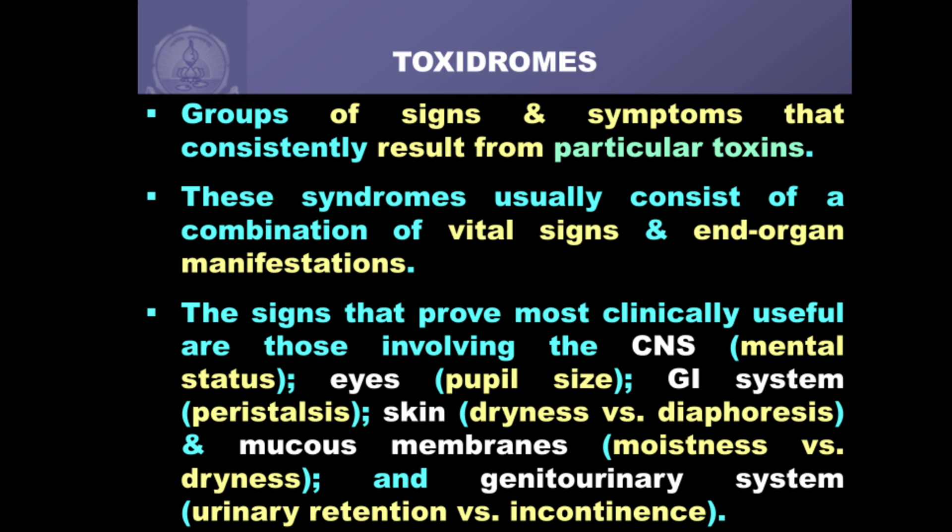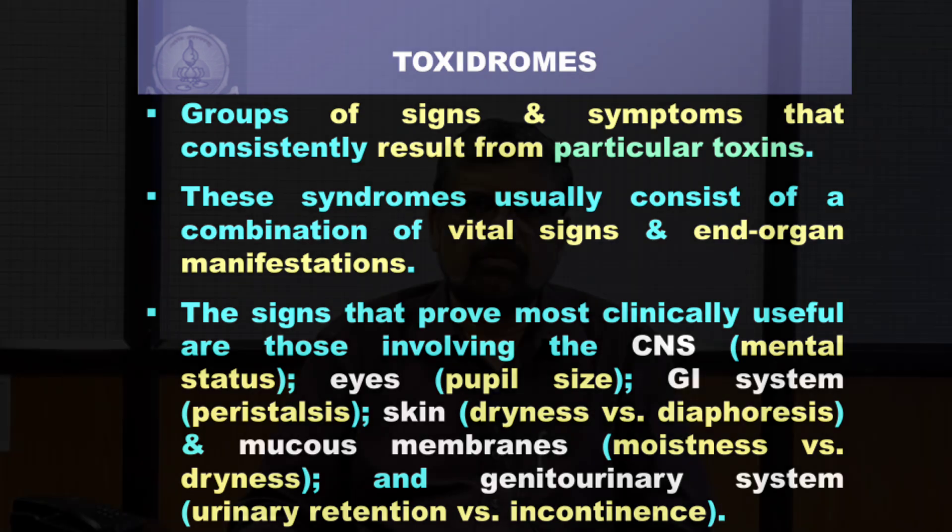A toxidrome is a combination of vital signs and end organ manifestations. The important signs we look at include: the CNS by way of mental status examination, the eyes reflected as pupil size, the gastrointestinal system reflected as peristalsis, skin manifestation either dryness or sweating, mucous membranes moist or dry, and genitourinary system manifesting as retention or incontinence. Everything becomes very simplified when you look at actual toxidromes. There are several today — maybe 20 or more — but we will look at 10 of the commonest, which are important from the examination point of view and commonly encountered in clinical practice.